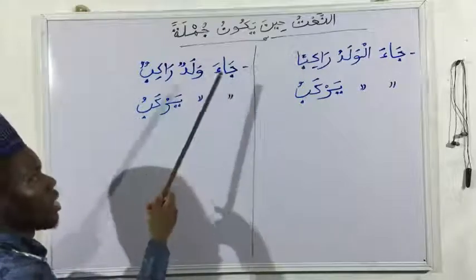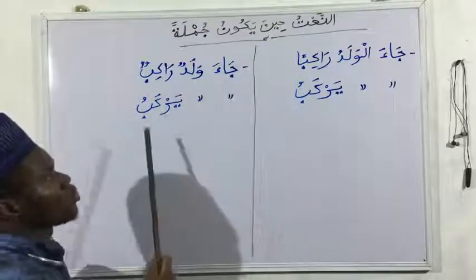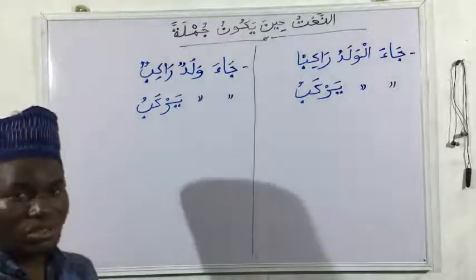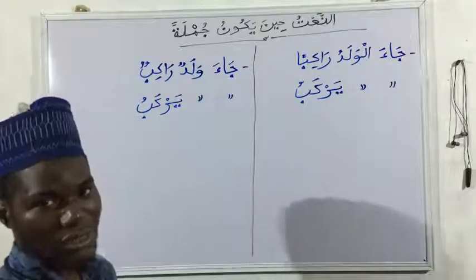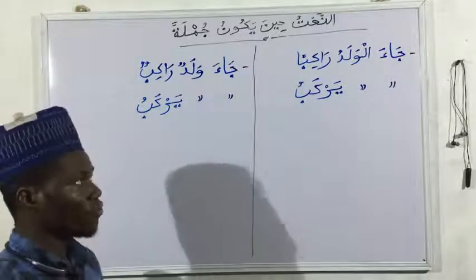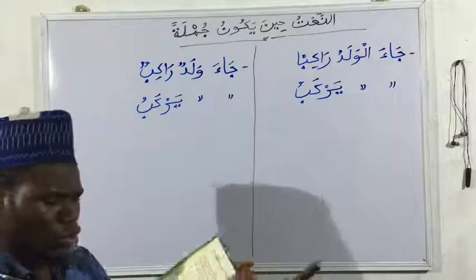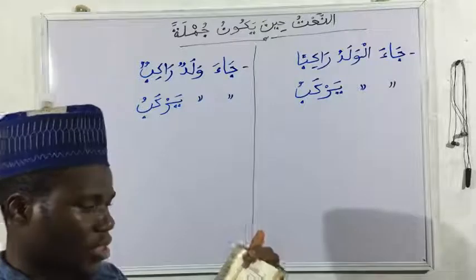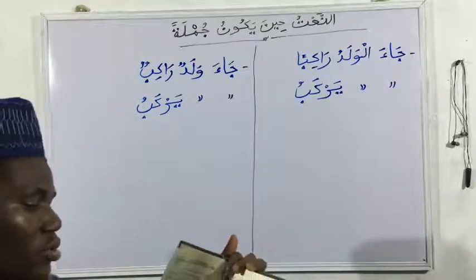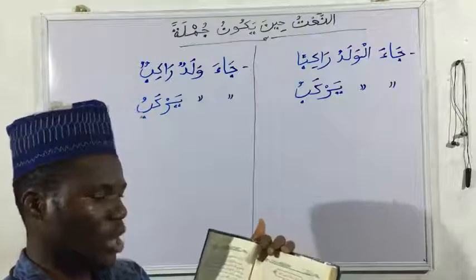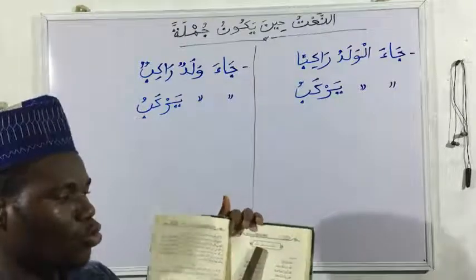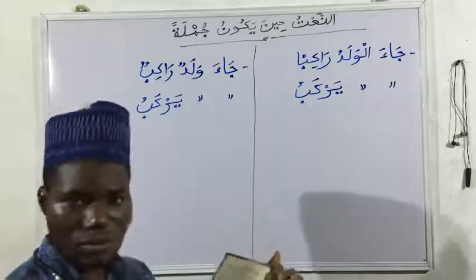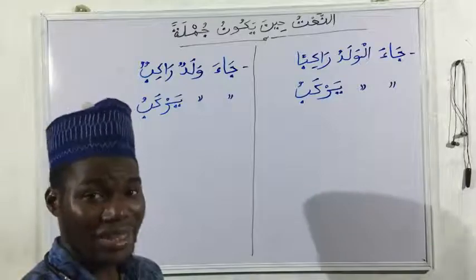We are going to be treating the next topic. Looking at our al-kitabu al-muqarrar, the recommended text we are using — Anahul Wadi — we are still under Yusuf Salih, Book Three. We have here: An-Naat, hina yakunu jumlatan — the adjective when it appears in sentence form.